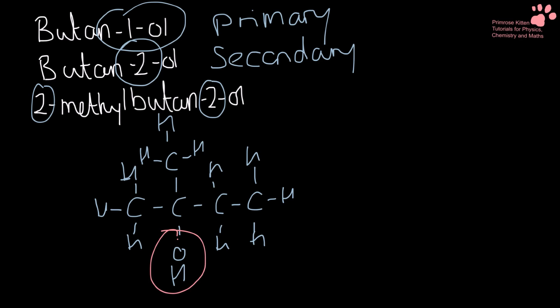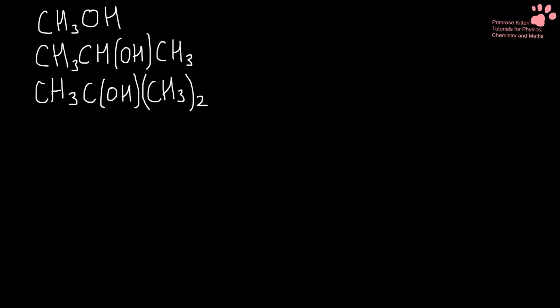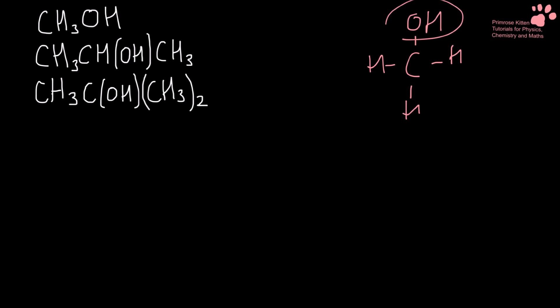Because the alcohol is attached to a carbon which has no hydrogens attached to it. You also need to be able to work this out from the structural formula. The easiest way to do this is by drawing things out, or you can start to learn a few patterns. So if we look at the first one, we have methanol, and that is a primary alcohol, because there are hydrogens attached to the carbon that it is attached to.